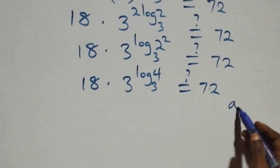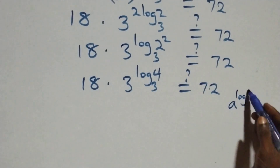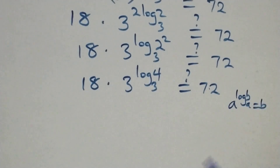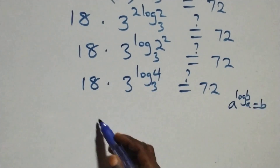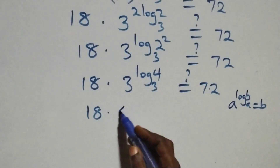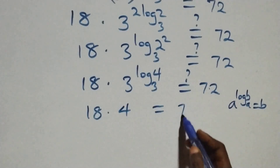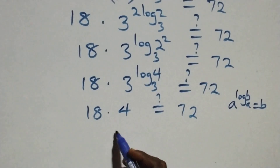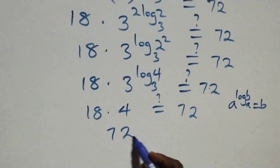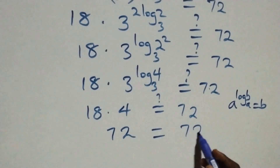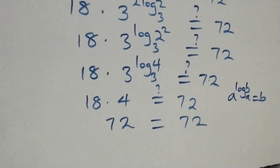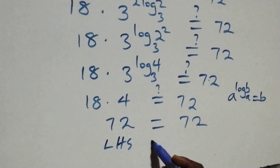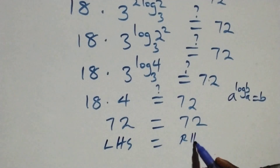This follows from the identity: when we have a raised to power log b to base a, it equals b. So 3 raised to power log 4 base 3 equals 4, and what we have is 18 times 4. Does this equal 72? Of course 18 times 4 gives us 72, which equals 72. Hence the left hand side equals the right hand side.